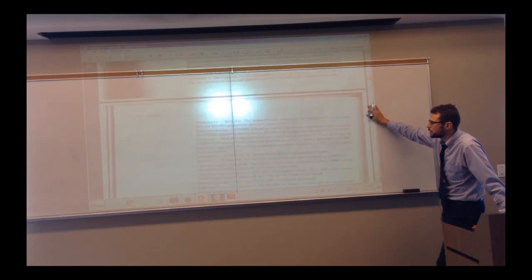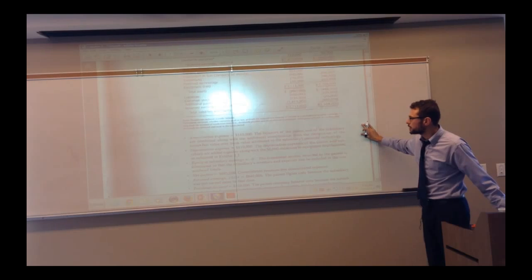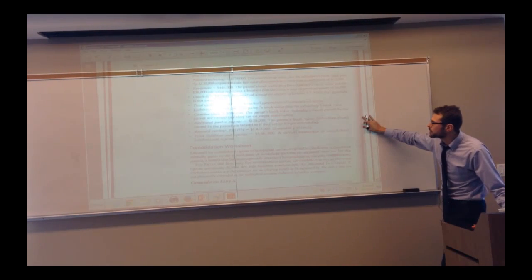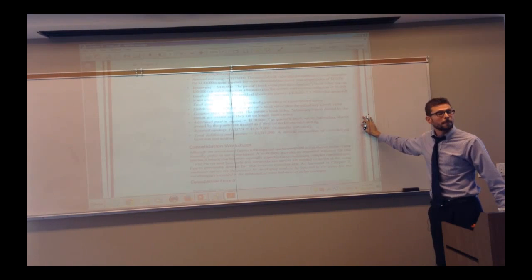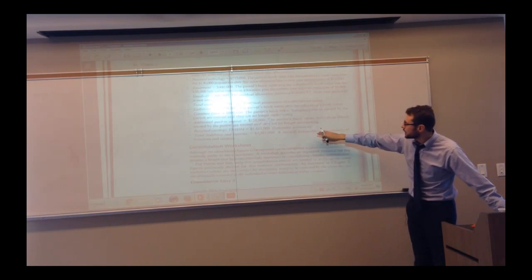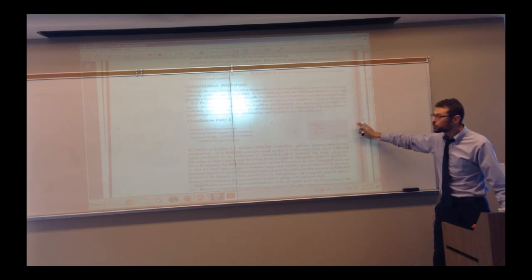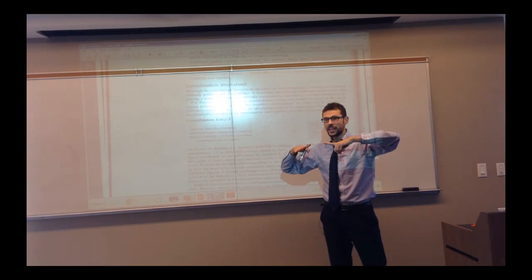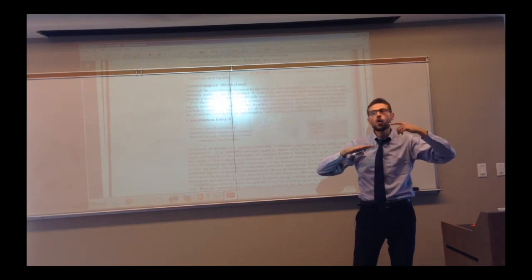And what the book does here is it goes through account by account - amortization, depreciation, every single account. And it talks about how you get the balance via a line, a sentence that tells you how you combine it. And then you go through the entries. So I want you guys to first understand how you combine each entry.